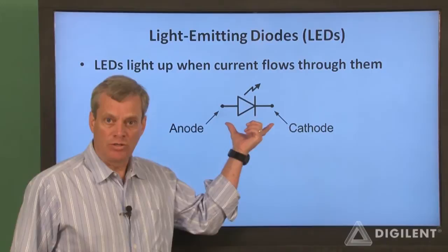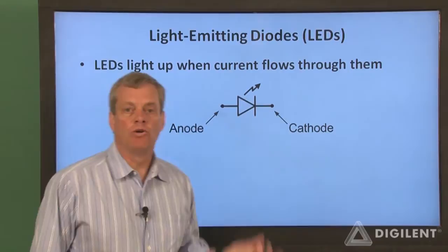This is the circuit symbol for an LED. It looks the same as our previous diode symbol except for the jagged arrow indicating light emission.